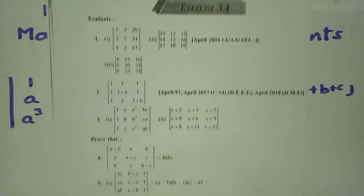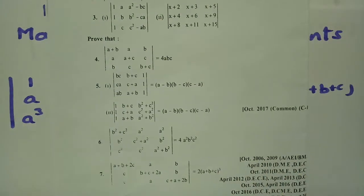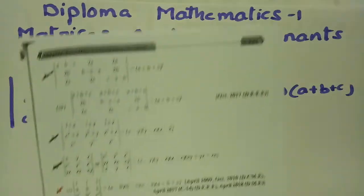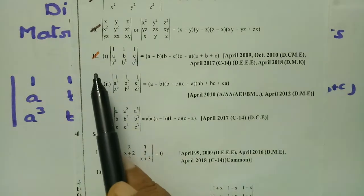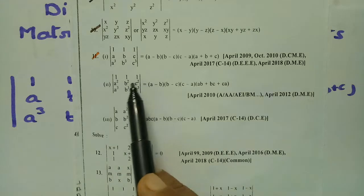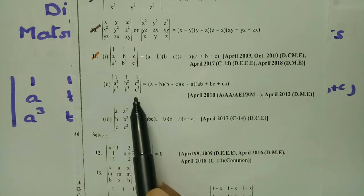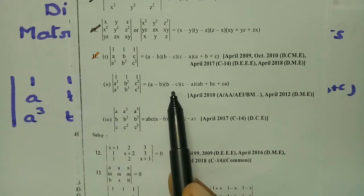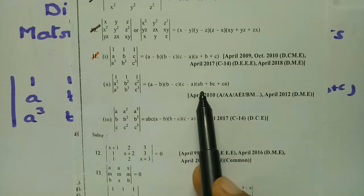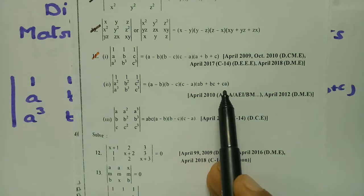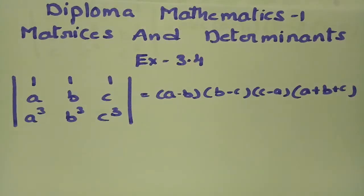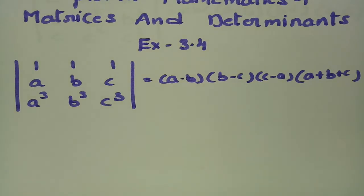I have given solutions for all these questions in my previous videos and now I am going to solve question 11. This is the determinant: 1, 1, 1 / a², b², c² / a³, b³, c³, which equals (a−b)(b−c)(c−a)(ab+bc+ca). This is also a most important question.